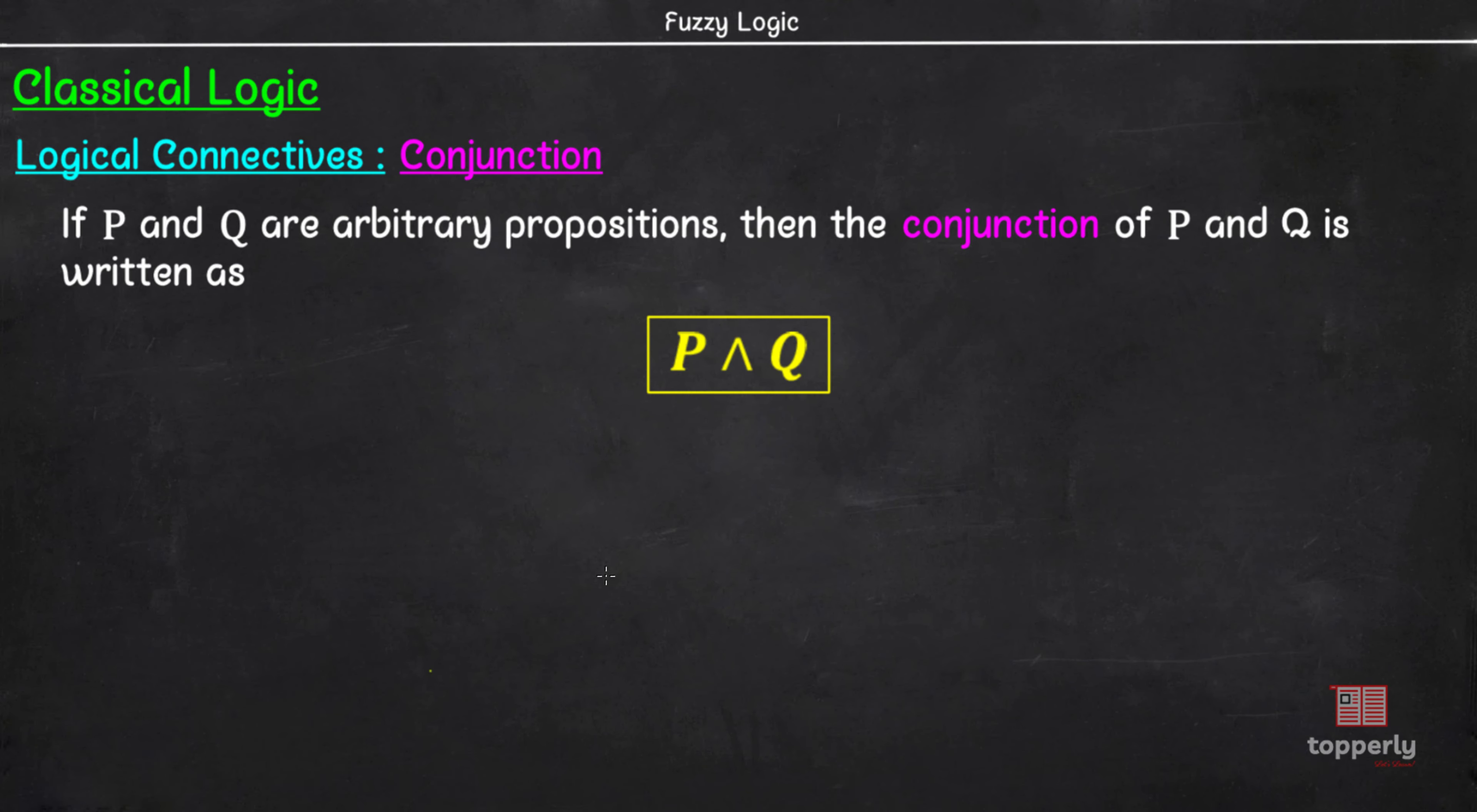Another interesting thing to note is that in situation 2 and in situation 3, I just interchanged the statements P and Q and still the truth value of P conjunction Q was the same in both cases. This shows that conjunction operator is commutative. That is, the order of the statements do not matter. Lastly, if we consider two propositions that are false, the statement formed by their conjunction is also false. So, when P is false and Q is false, P conjunction Q is also false.